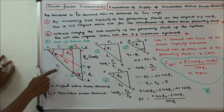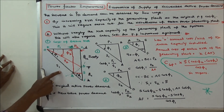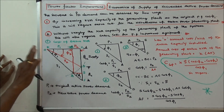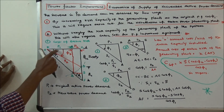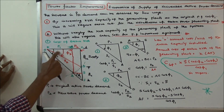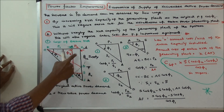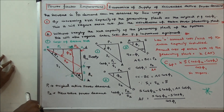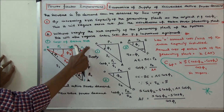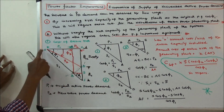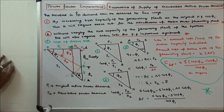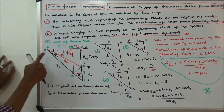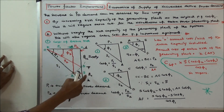This is the power triangle. This triangle consists of three triangles. Here P1 is the original active power demand, and P2 is the new active power demand. The first triangle is OBA, and the second triangle is OCD.